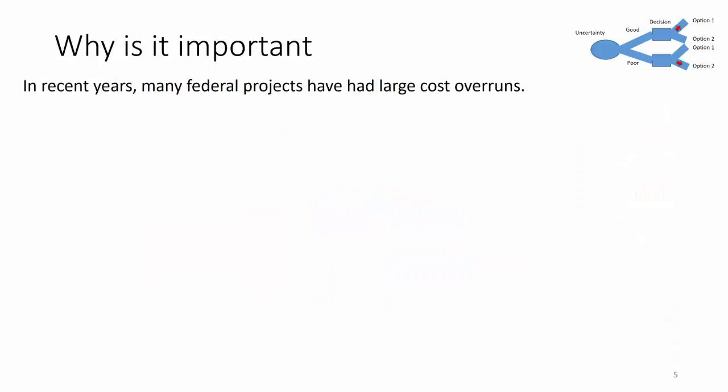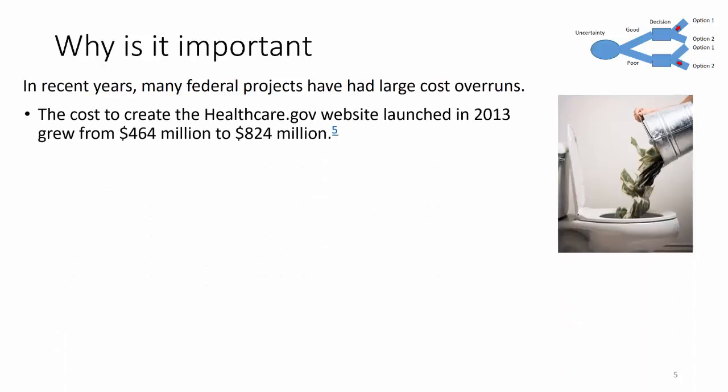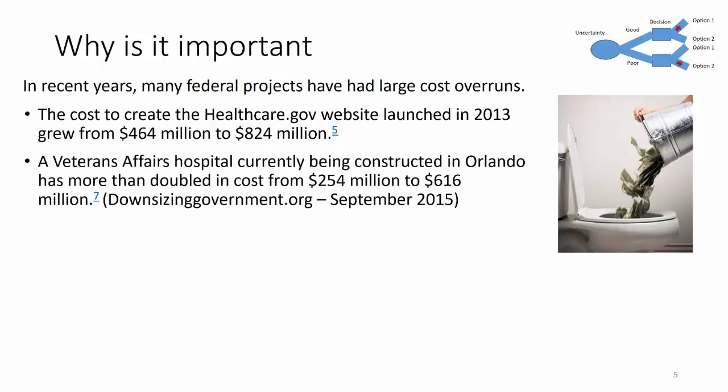In recent years, many federal projects have had large cost overruns. For example, the cost to create the healthcare.gov website launched in 2013 grew from $464 million to $824 million. And the Veterans Affairs Hospital currently being constructed in Orlando has more than doubled in cost from $254 million to $616 million, as reported in September of 2015.